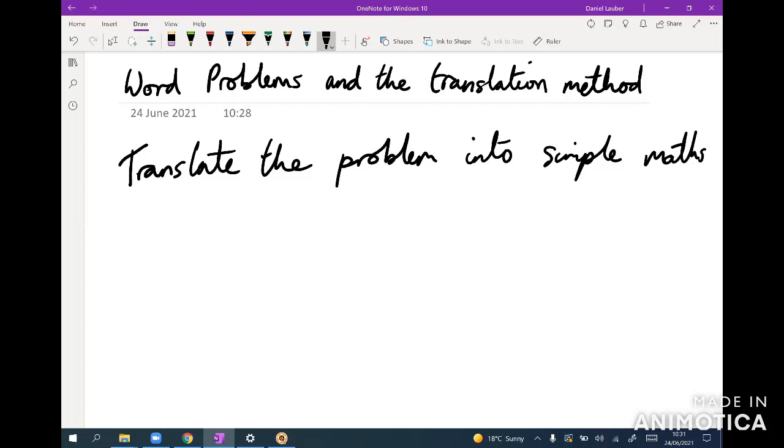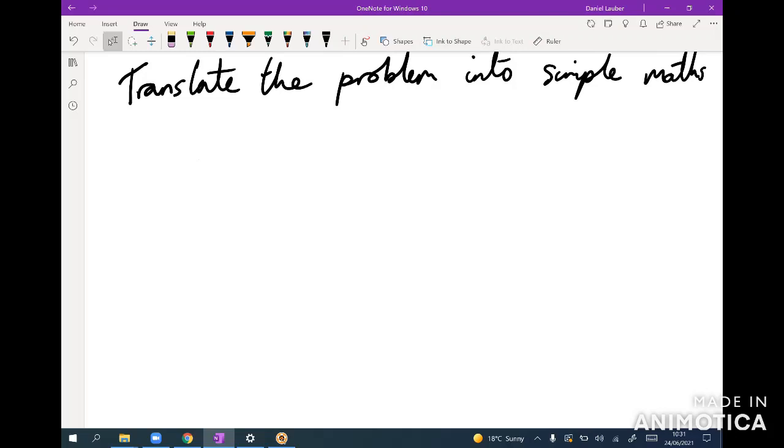And that's what I do before worrying about what the question is actually asking or anything like that. So whenever you see a new question, instead of just thinking to yourself okay how do I answer this, all you want to do is say okay what does each sentence mean. Don't read through the whole question without writing anything down. Just go sentence by sentence, line by line and try and actually really extrapolate everything you can and write it in the most simple form.